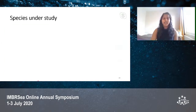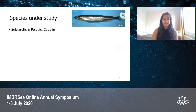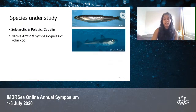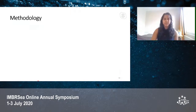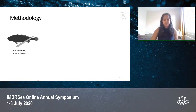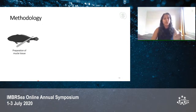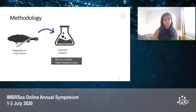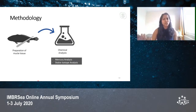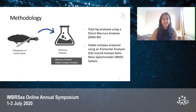We sampled three species: the subarctic and pelagic capelin, the native Arctic and sympagic-pelagic polar cod, and the subarctic and benthopelagic Atlantic cod. The methodology began with preparation of muscle tissue — separating it from the rest of the matrices, freeze-drying it, and homogenizing it. This was followed by chemical analysis, including mercury and stable isotope analysis. Total mercury can be used as an adequate surrogate for methylmercury in fish communities, because approximately 80 to 99 percent of total mercury found in fish is made up of methylmercury. Hence, total mercury was analyzed using a DMA-80 direct mercury analyzer.